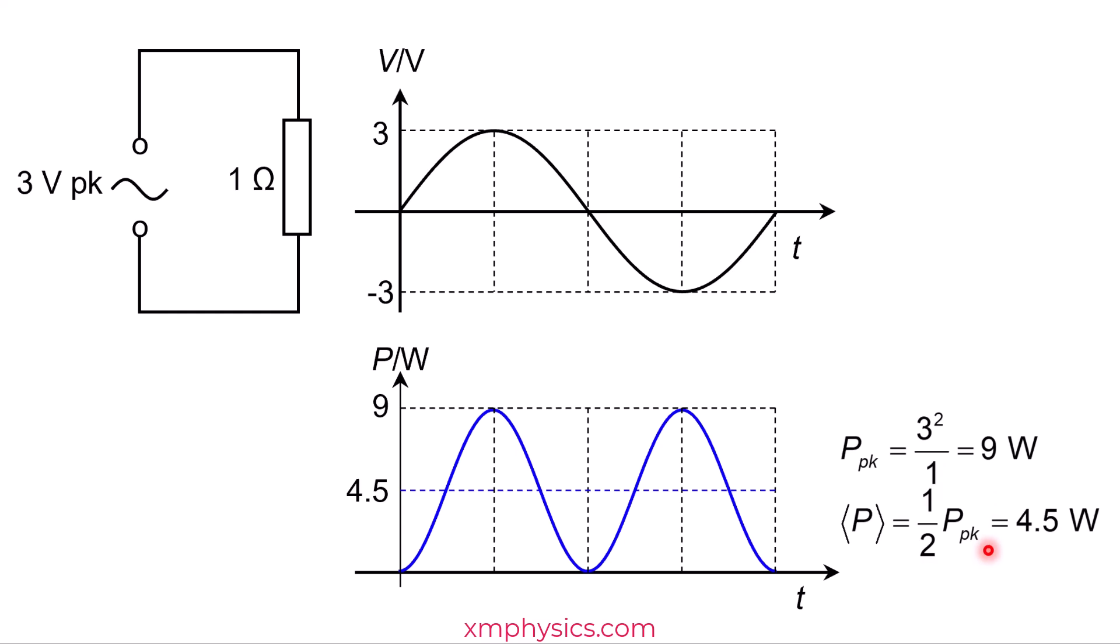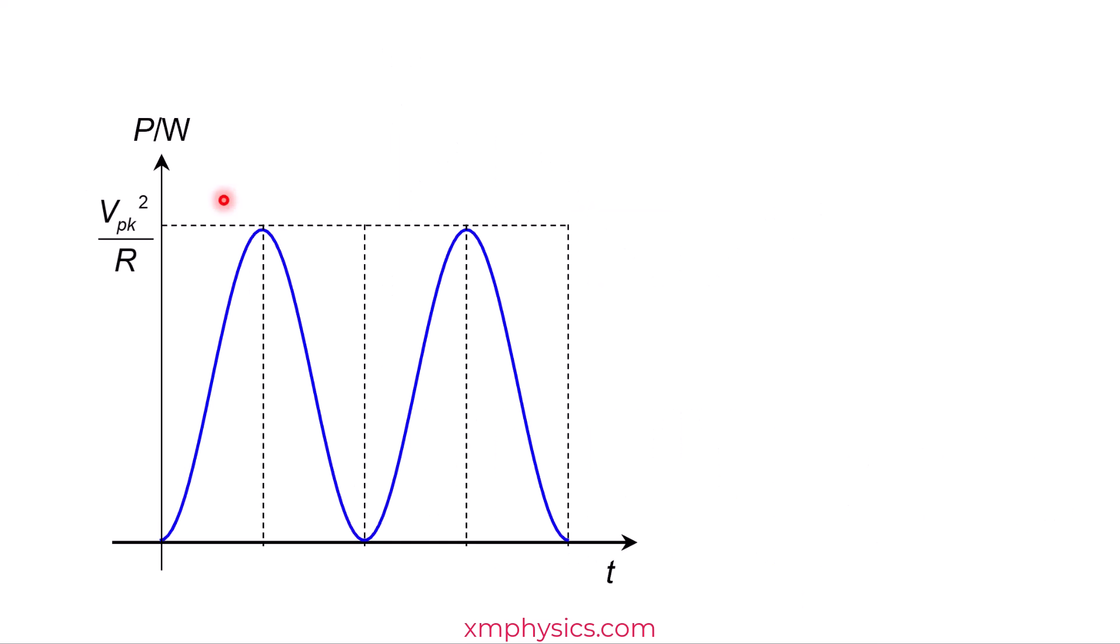And that's a very convenient coincidence. So in general, if you apply an AC voltage with peak voltage of Vpeak across a resistor R, then the peak power dissipation is Vpeak squared divided by R. But the average power dissipation is half the peak power dissipation. So let's write it down here. Peak power is Vpeak squared divided by R, whereas average power is half of the peak power dissipation.